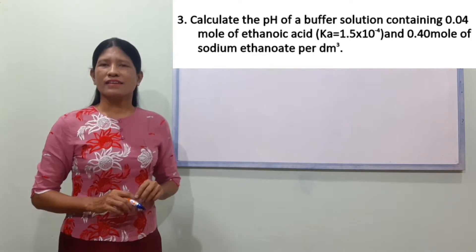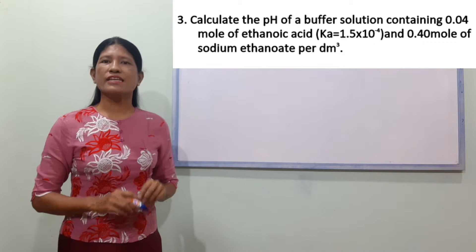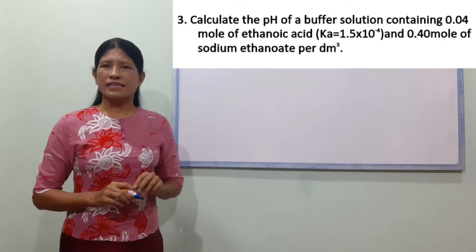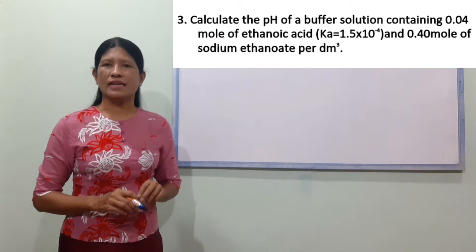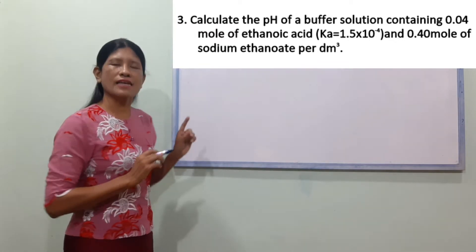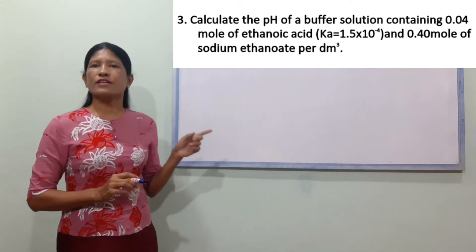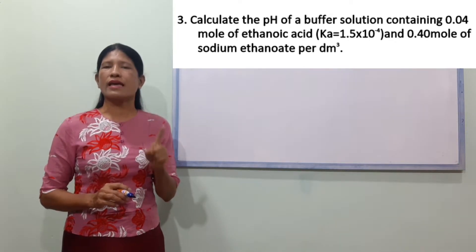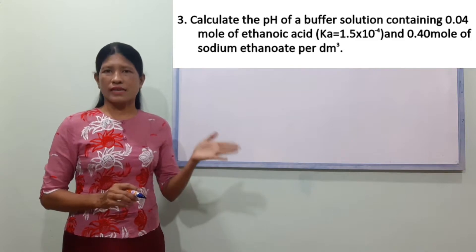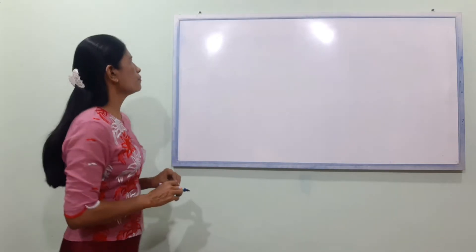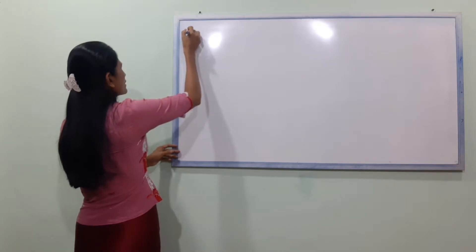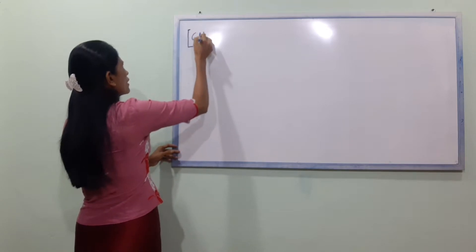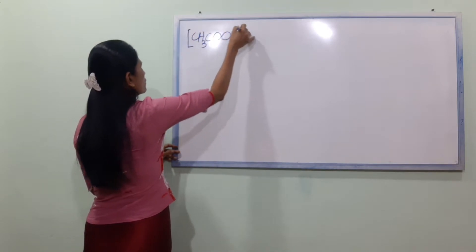So, number one is sodium ethanoate. The ethanoic acid solution — if we are using ethanoic acid, we can have 1 dm³ and we can have 2 dm³. If we consider ethanoic acid, the concentration of ethanoic acid is 1 dm³.